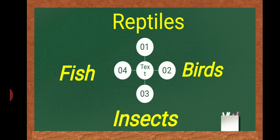There are four kinds of animals mainly which lay eggs. Number one, reptiles; number two, birds; number three, insects; and fish and water animals.